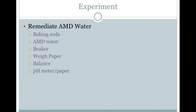Now treat your own AMD water using the addition of basic material. Each group will get 100 milliliters of untreated acid mine drainage impaired stream water. You will need baking soda, AMD impaired stream water, a beaker, weigh paper and balance, and pH strips or meter. You will add baking soda one gram at a time to the AMD impaired water until you achieve a neutral pH. Keep track of how much baking soda is added and record the observations of the water from each addition. Thank you for your attention.